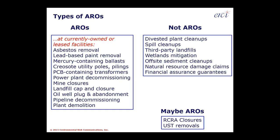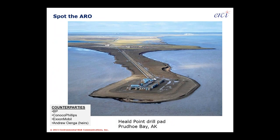Activities that aren't AROs include a divested plant that needs a cleanup or a spill that needs a cleanup. Items on the border between being an ARO and not being one are RCRA closures and UST removals — those tend to depend on whether a given waste stream or asset is still in use related to a RCRA permit or UST.